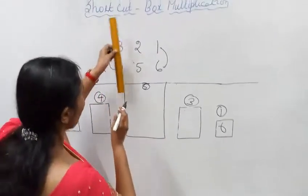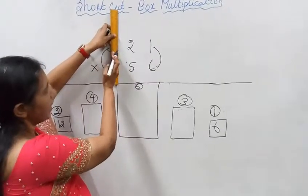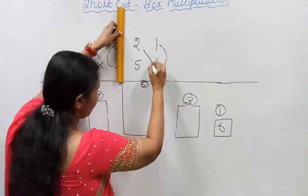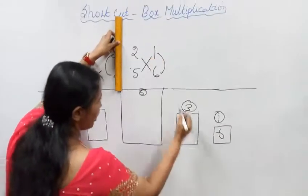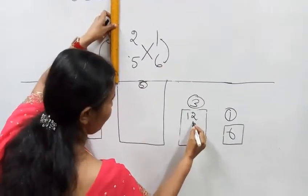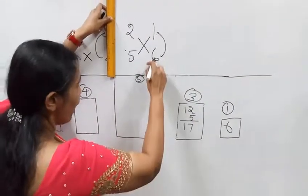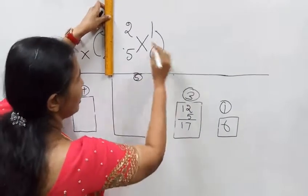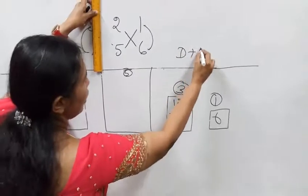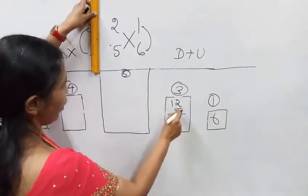For 3rd box, hide the last column. Then downward plus upward: 2 sixes are 12, 5 ones are 5. That is 17.